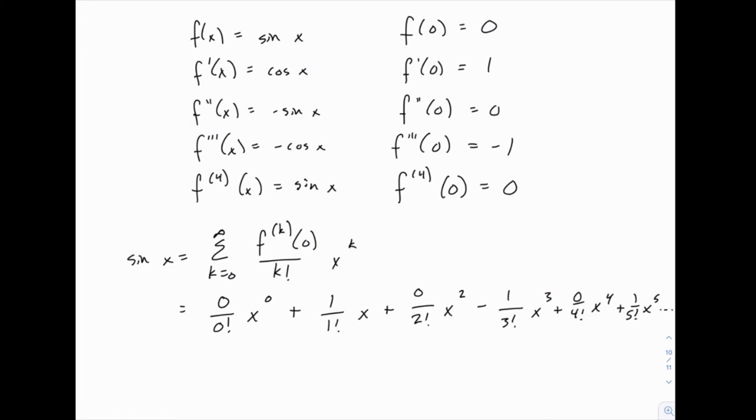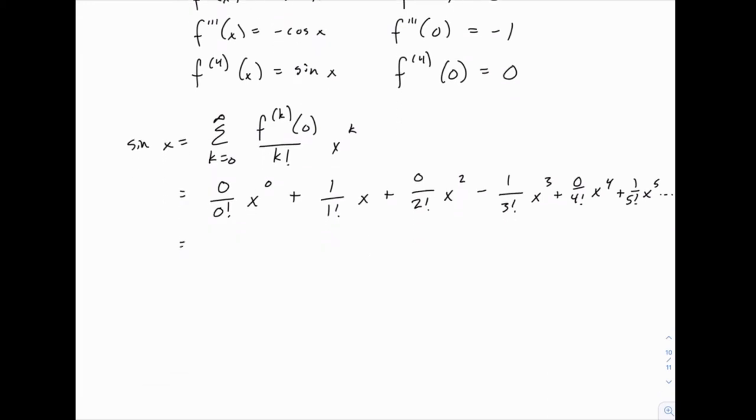Now if we drop off the terms that are 0, what we get is 1 over 1 factorial x, minus 1 over 3 factorial x cubed, plus 1 over 5 factorial x to the 5th, and if we kept going, you can see the next one would be minus 1 over 7 factorial x to the 7th, and then the same thing with 9, and so on.